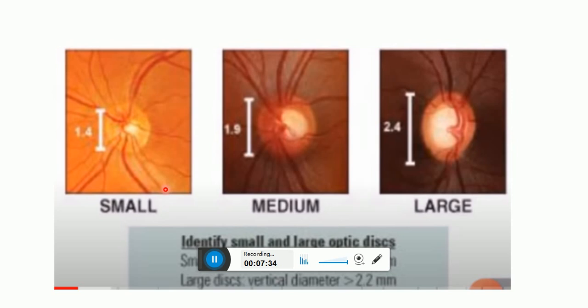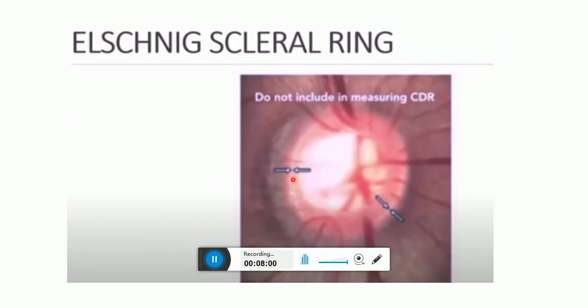The average vertical diameter is 1.8 mm, the average horizontal diameter is 1.7 mm. Less than 1.5 mm is small, more than 2.2 mm is large. The peripapillary scleral ring should not be included as a part of the optic disc area, as this may falsely increase the size of the neuroretinal rim and decrease the cup to disc ratio.